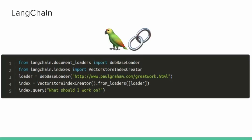One reason why these have exploded, and the reason that I got into it, is due to a library called LangChain. LangChain, if you haven't heard of it, is a Python library that provides a lot of tooling around working with large language models, which is the technology that powers GPT and all these other AIs. The really impressive thing about LangChain is that in just three lines of code — two imports and three lines — you can basically create one of these custom chatbots. In this example, this will create a chatbot specific to Paul Graham's essay, How to Do Great Work.